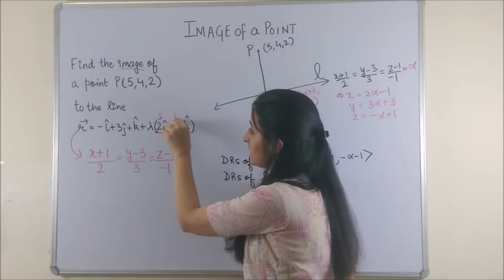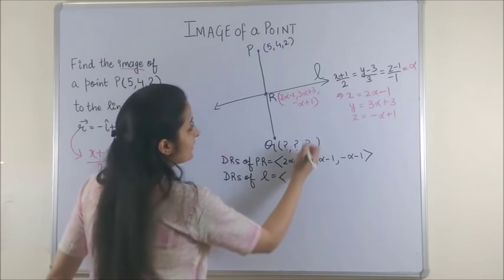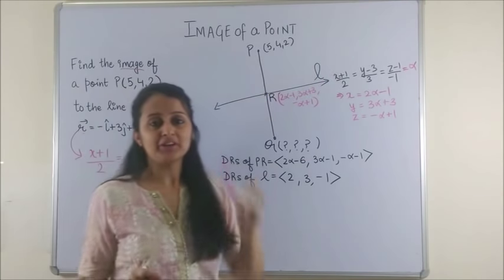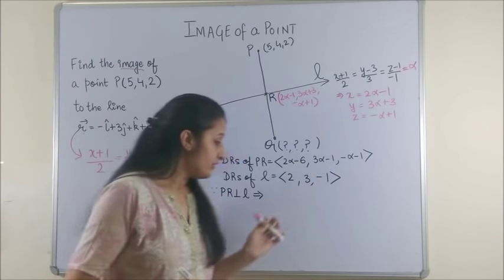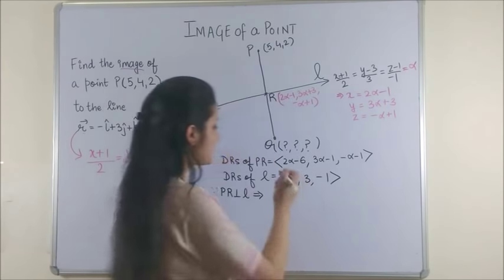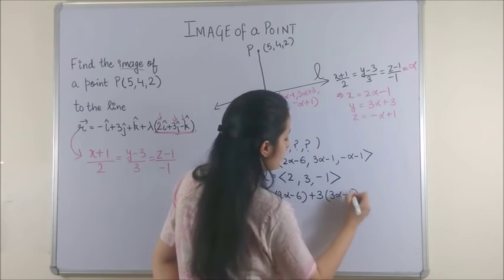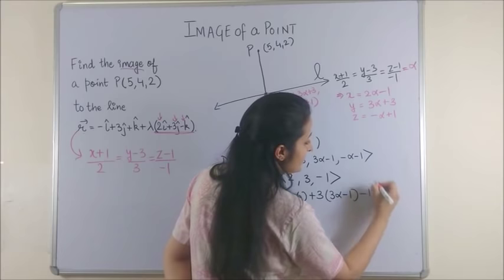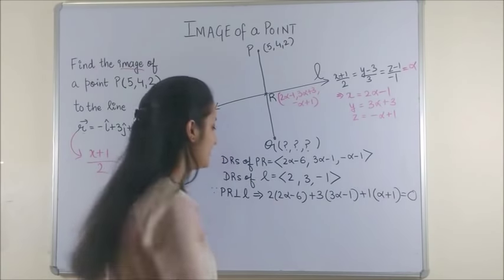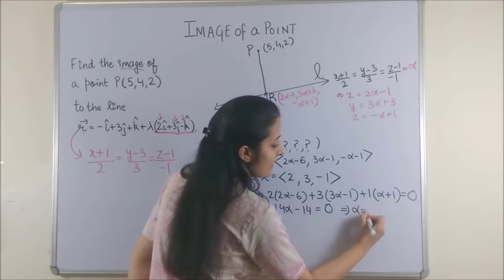Or you can also say they are the coordinates of i cap, j cap, k cap if given in the vector form. So here it becomes 2, 3, -1. As you can clearly see, this line PR is perpendicular to line L. So now if two lines are perpendicular, we know the dot product of their direction ratios is equal to 0. So we use the same, we say 2(2α - 6) + 3(3α - 1) - 1(-α - 1), that makes it plus, is equal to 0. Now all we need to do is solve for the value of α. So in solving this is what we get and thus our α is equal to 1.